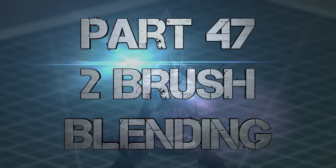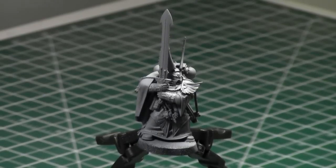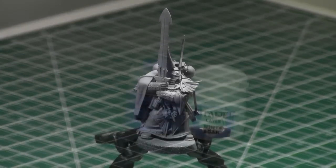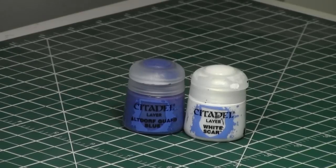Blending using two brushes and no drying retardant. Today I will be talking about two brush blending, which is kind of like wet blending in some people's eyes, but it's not using drying retarders and it involves two brushes, one of each color. So today we'll be doing a two brush blend on that miniature sword with Altdorf Guard Blue and White Scar.